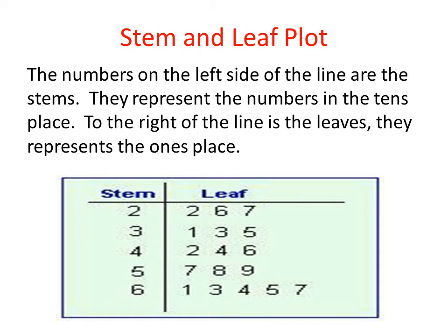One way of organizing data is the stem and leaf plot. In the stem and leaf plot, we take each number in our data set and separate it out. Typically, under the leaf side is the ones digits, and under the stem side, on the left of the vertical line, is the tens digit.